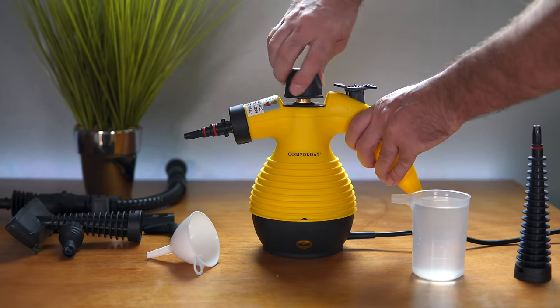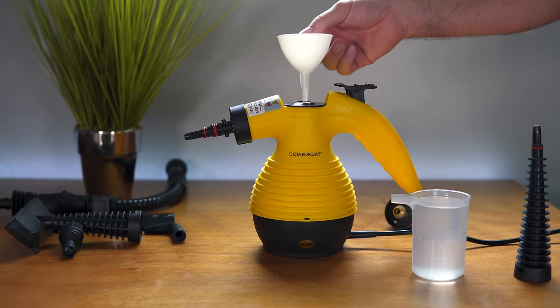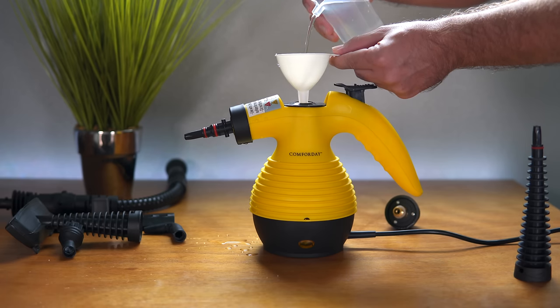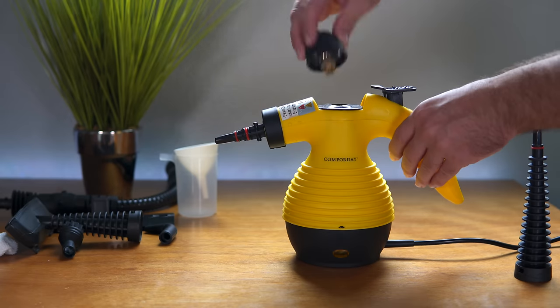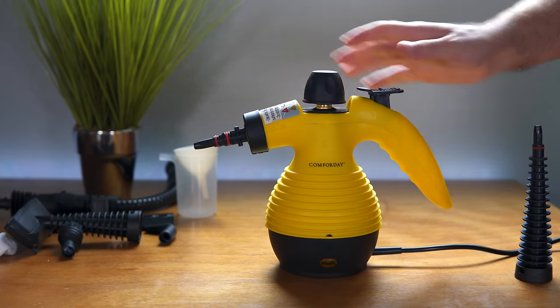The first thing we're going to do is unscrew this cap on the top. This is what this funnel is for - the funnel goes into this hole here. Then we're going to pour our water in there slowly until we get it all in. Once we get our water in, we put the lid back on just like that, just snugly. And that's it.